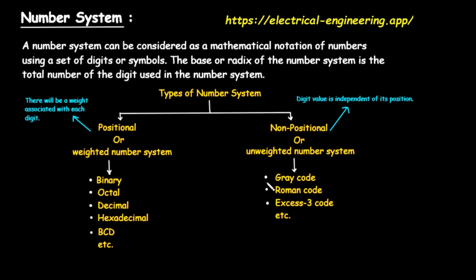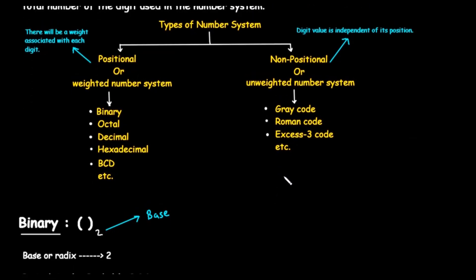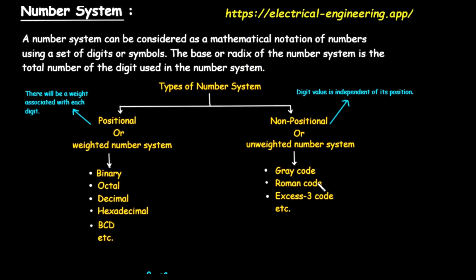In these systems, the value of a digit or symbol is independent of its position. The symbol has a fixed value no matter where it appears in the number. A classic example is the Roman numeral system. The symbol V always represents the value 5. The symbol X always represents 10. While their arrangement can mean addition or subtraction, the core value of the symbol itself doesn't change based on its column. Other examples include gray code and XS3 code, which are used in more specific digital electronics applications.